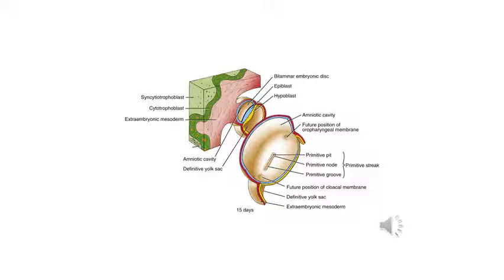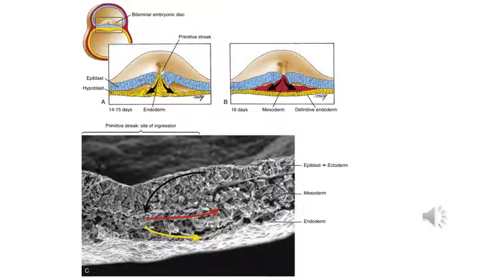Formation of the primitive streak leads to the important process of gastrulation. During gastrulation, epiblast cells move toward and through the primitive streak, and into the interior of the embryo.